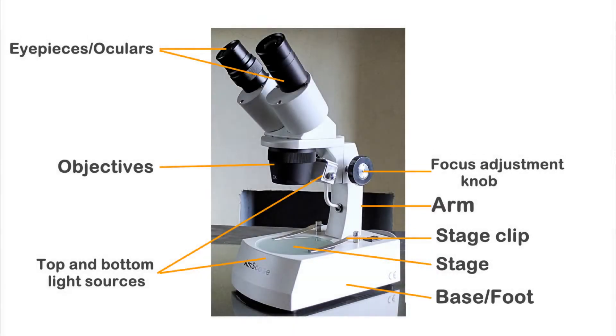The Stereo Microscope consists of the binocular eyepieces, objective lenses, a stage and light source from above and below the stage, all housed in a sturdy metallic body.